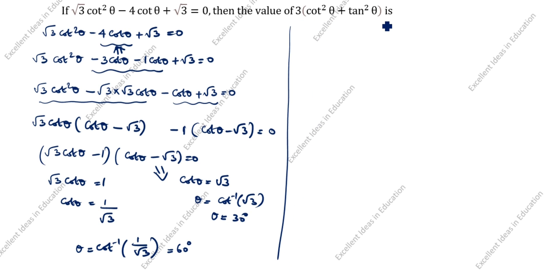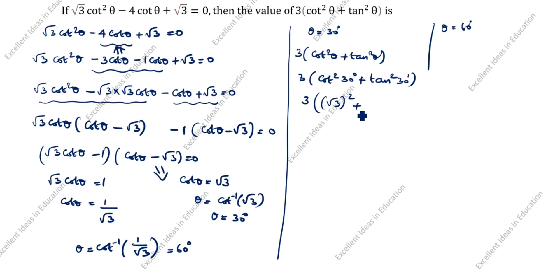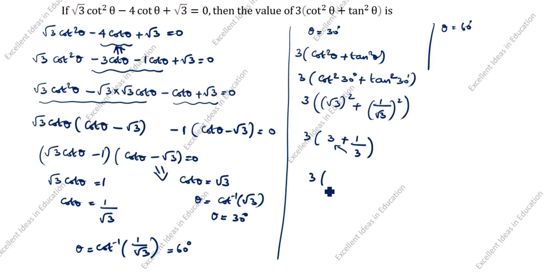Now we will find this value. We will take theta equal to 30 degrees. What is given? 3 open the bracket cot squared theta plus tan squared theta. Cot 30 is root 3, so root 3 the whole square plus tan 30 is 1 by root 3, the whole square. Next: 3 into root 3 times root 3 is 3, plus 1 by root 3 times 1 by root 3 is 1 by 3. Cross multiply: 3 into 3 plus 1 by 3, this 3 cancels, giving 10. So this value is 10.